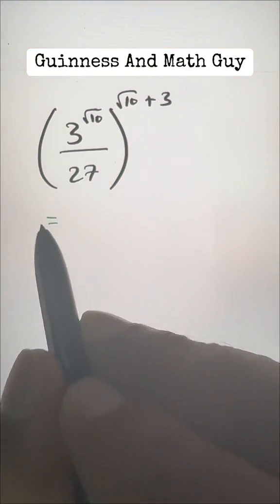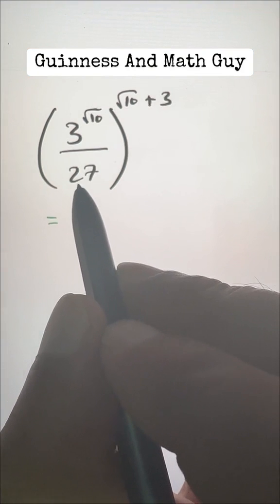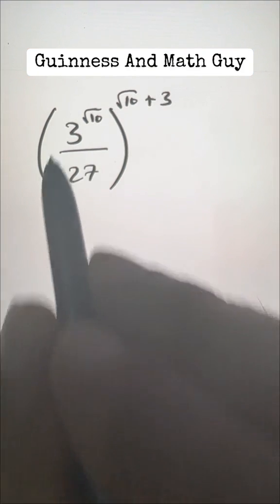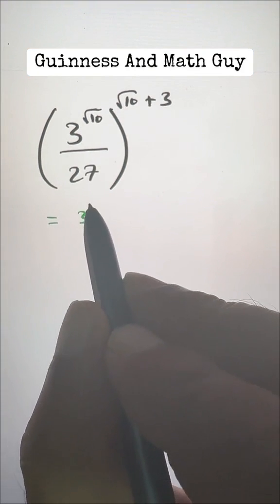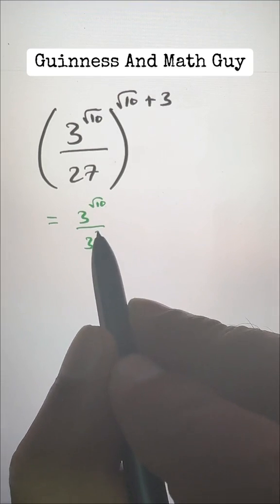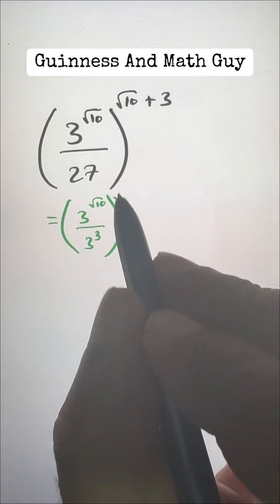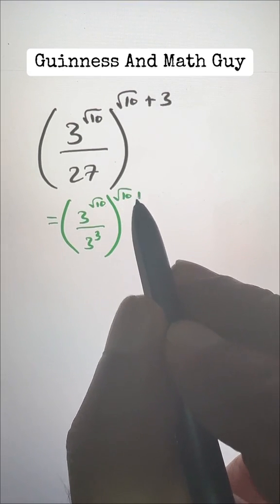Here we can write this 27 as 3 to the power 3, because 3 times 3 times 3 is 27. So 3 to the power square root of 10 divided by 3 cubed, and to the power of this square root of 10 plus 3.